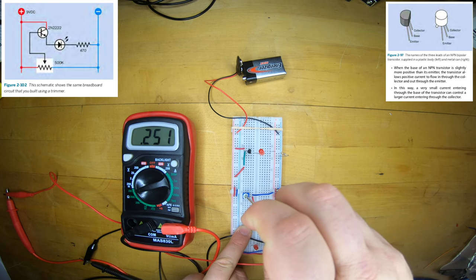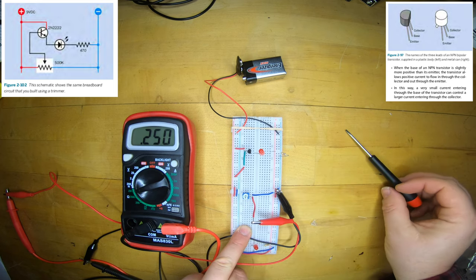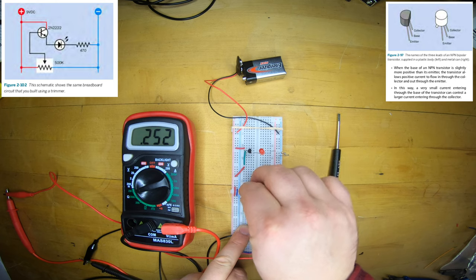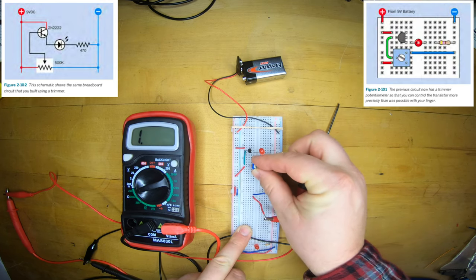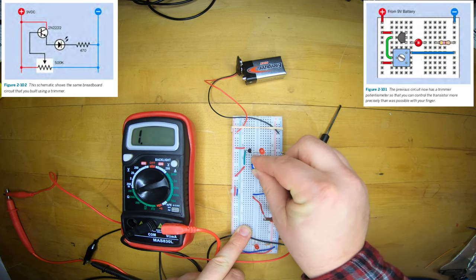Just always be sure that you're plugging your pot in so that the three leads go in three separate rows of the breadboard. And now we're going to move it up and place it in the position where before I was tapping my fingers.